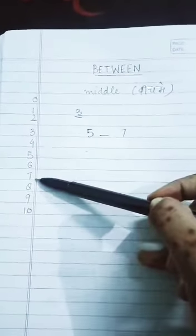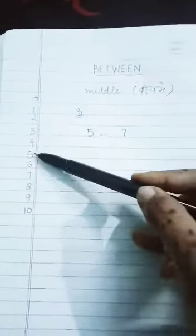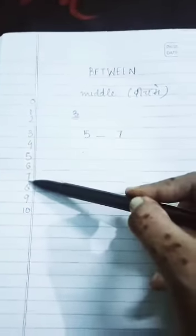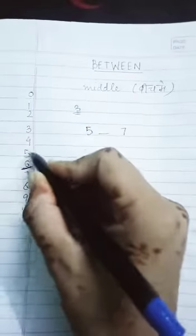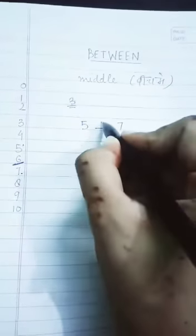So what were we trying? We were trying to find the number in between five and seven. And what did we see? We saw that six is between five and seven. So we will write that six is between five and seven.